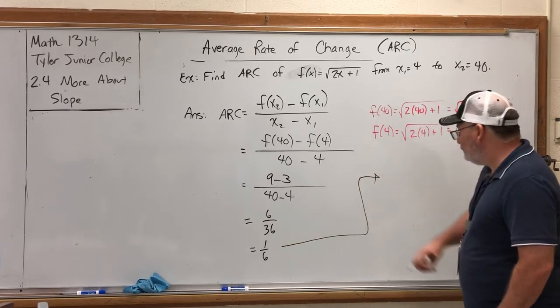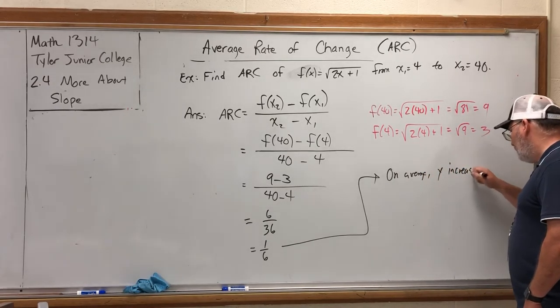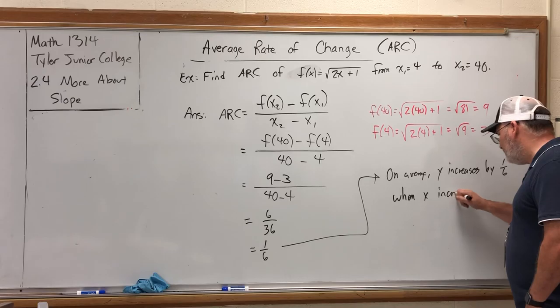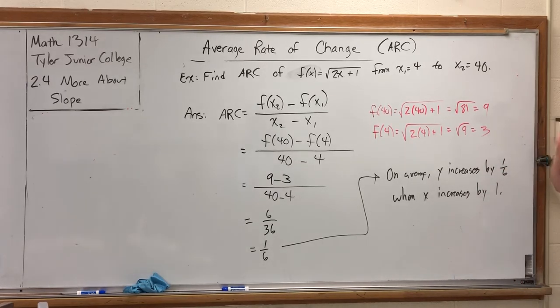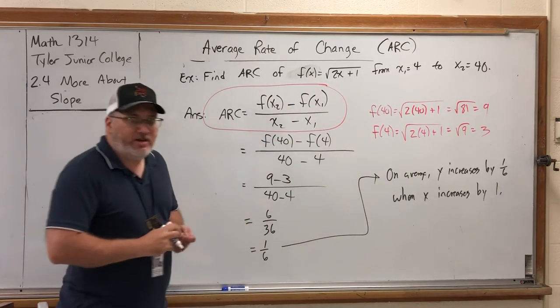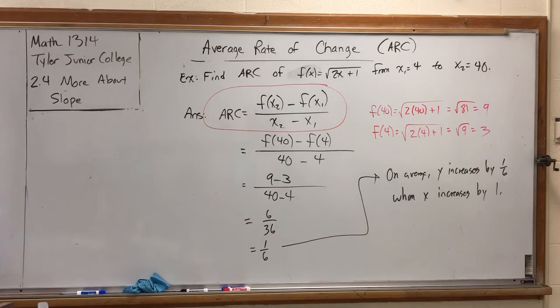So on the top we get 6, on the bottom we get 36, and this reduces to 1/6. So what does this mean? On average, y increases by 1/6 when x increases by 1. When you're interpreting slope as a rate of change, you're always talking about x increasing by 1 unit. As x goes up by 1, the y, on average, increases by 1/6. It doesn't go up 1/6 every time, but on average. If it did, it would be a line, and that's not a linear function. So finding the average rate of change of a function is really just finding the slope. But instead of giving you two x's and two y's, I'll give you two x's and a function. Go make your own y's, but then find the slope.